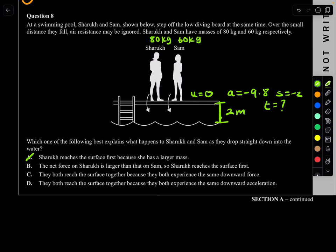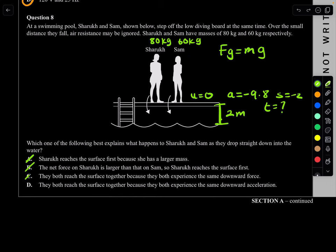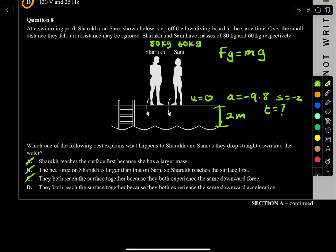Looking at the options: A says Shahrukh reaches first due to larger mass — wrong, they land at the same time. B says net force on Shahrukh is larger and she reaches first — the net force is larger (Fg = mg), but that doesn't mean she lands first. C says they land together because of the same downward force — wrong, forces differ. D says they both reach the surface together because they both experience the same downward acceleration. Yes, both experience −9.8 m/s². D is the answer.